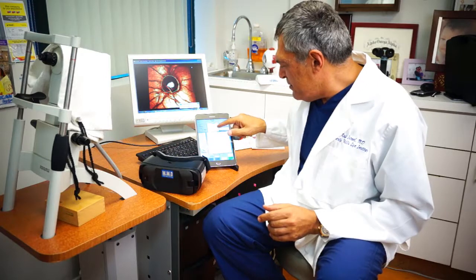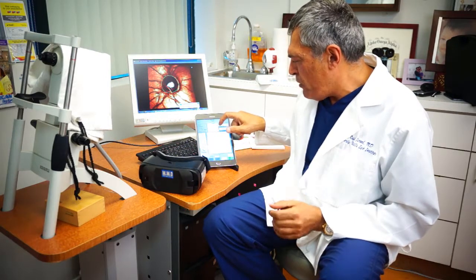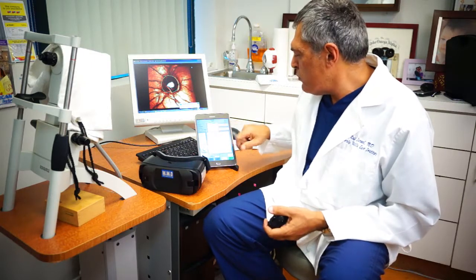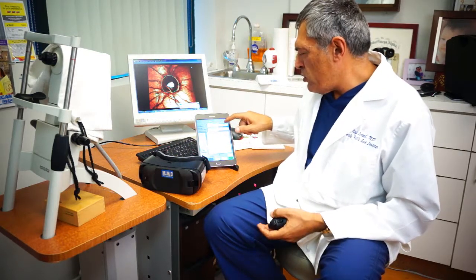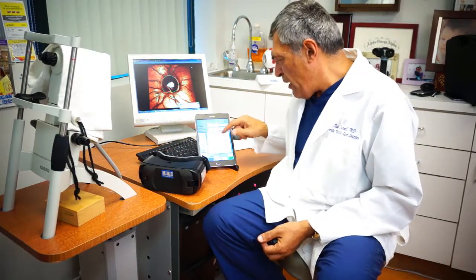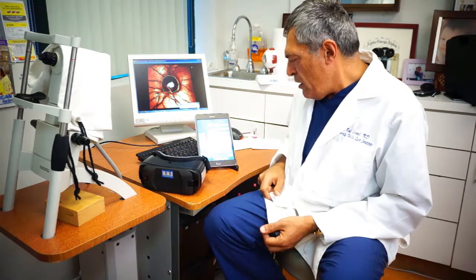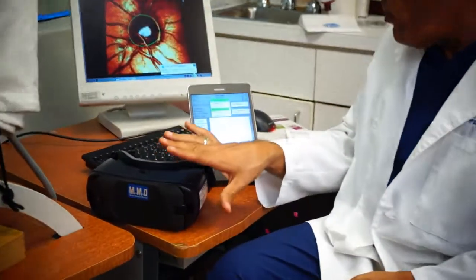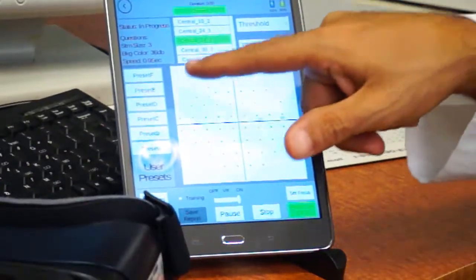You select the pattern and the patterns are 10-2, 24-1, 24-2, 30-1, 30-2. So I usually like to do a 24-2. I like to do a threshold test and this will do an interactive fast threshold test. So at this point you press the start and the controller will now program the virtual reality goggle the correct test pattern. Here is the test pattern.